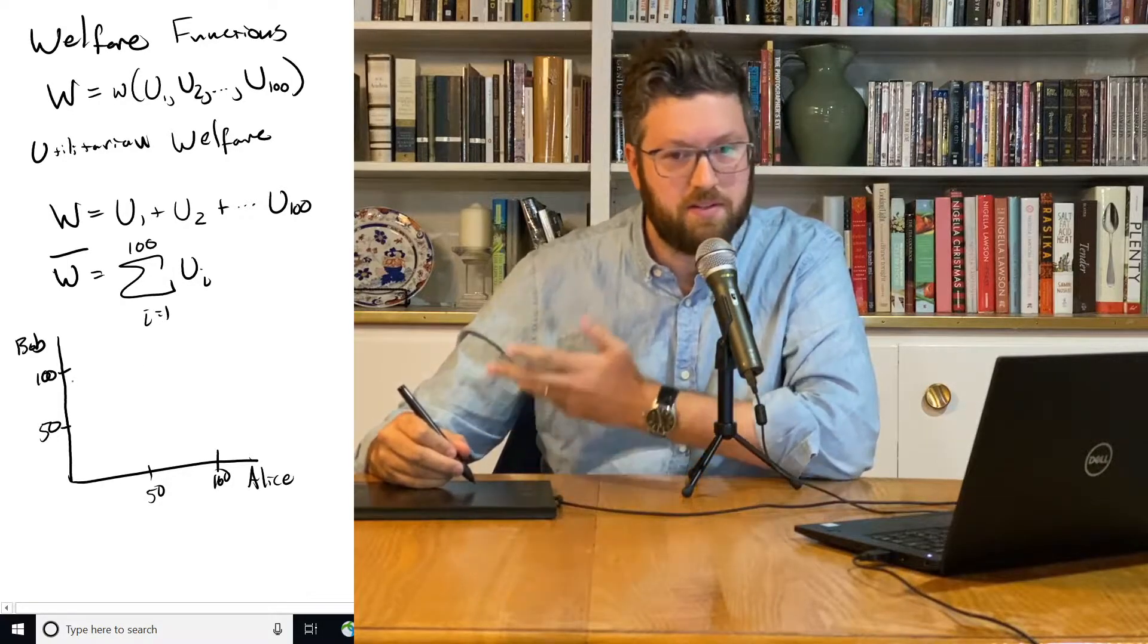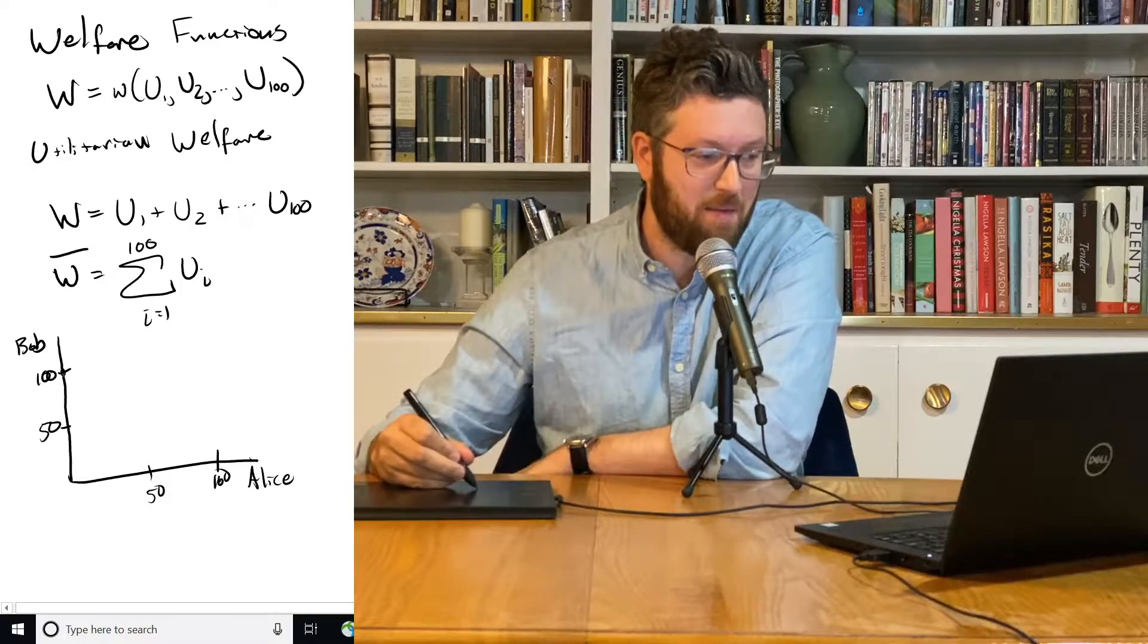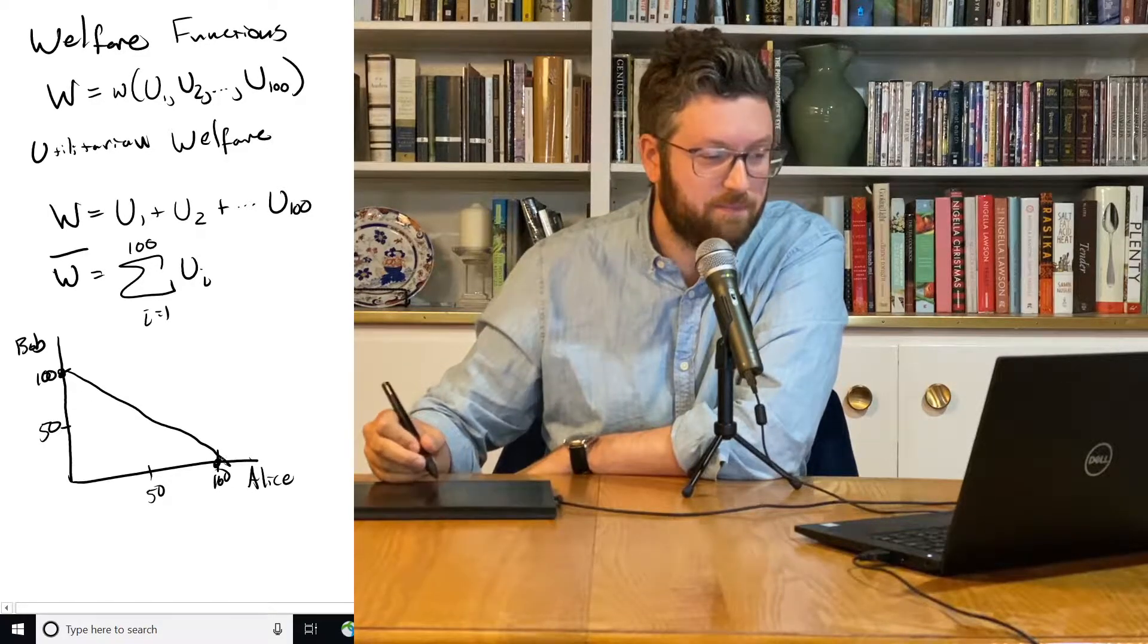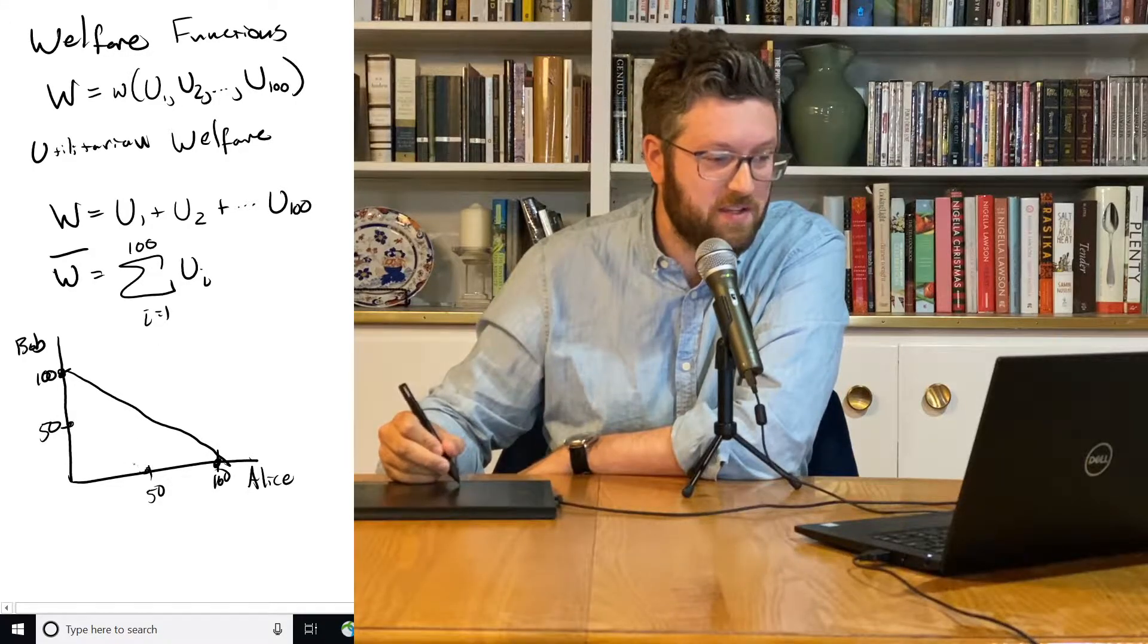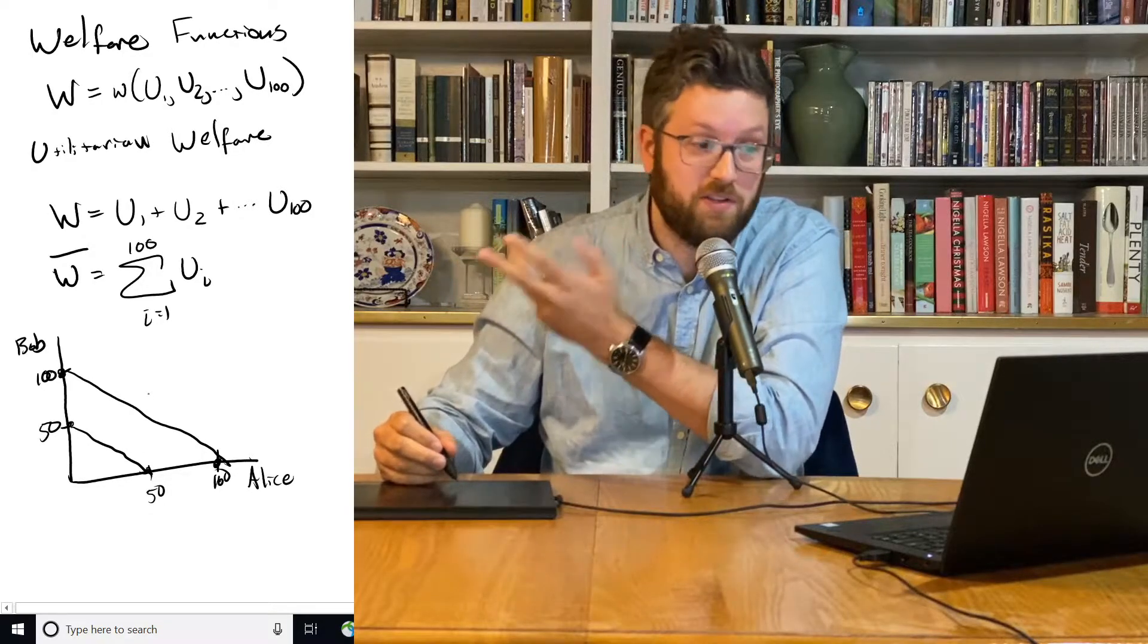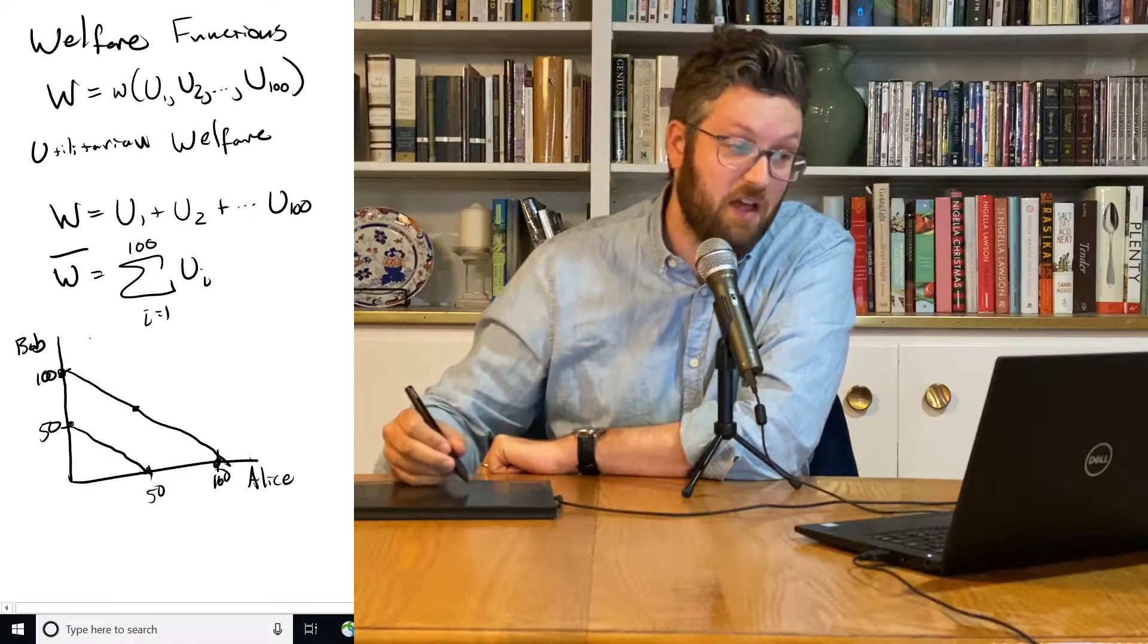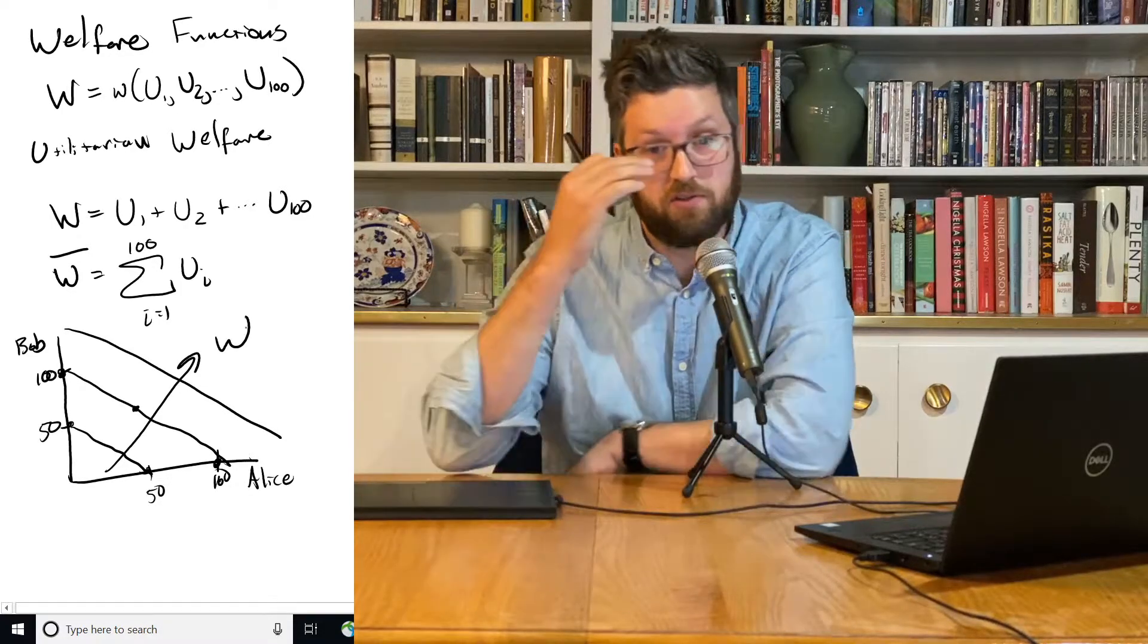And this is saying that it's only the total sum of welfare that matters. So if Bob has 100 or Alice has 100, either option is great. If Bob has 50 or Alice has 50, we just add it up. We're indifferent between all those. All of those are equally good ways to run society. Something in the middle where they each have 50 is just as good as Bob having 100 and Alice having nothing. And we can keep going out here, and welfare is increasing as we move in this direction.